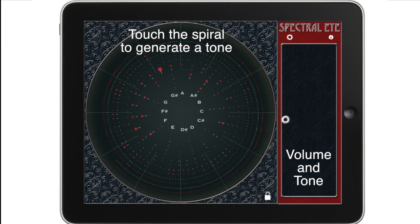New to this version of SpectralEye is a simple synthesizer to let you play with sounds. Touch the spiral and move in the clockwise or counterclockwise direction to change pitch. Use the tone controls to shift from a simple sine wave to a tone with a few additional harmonics.